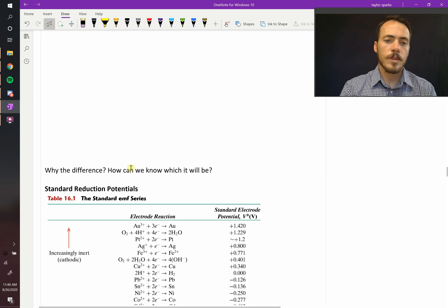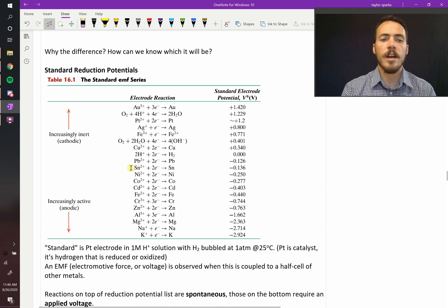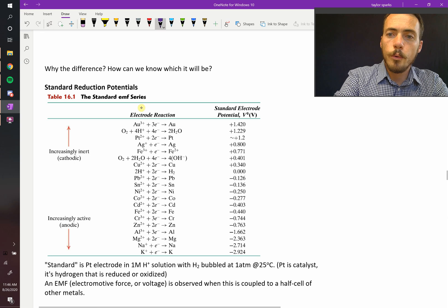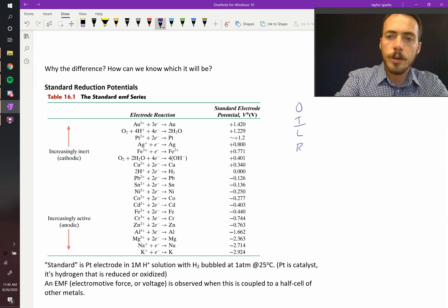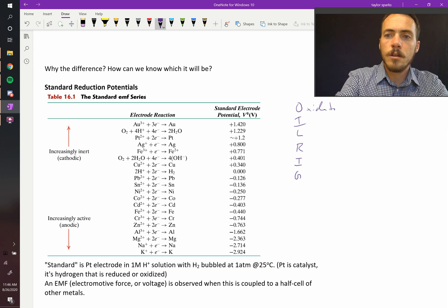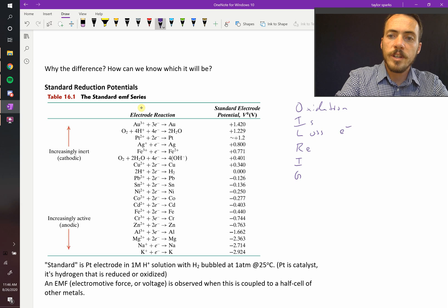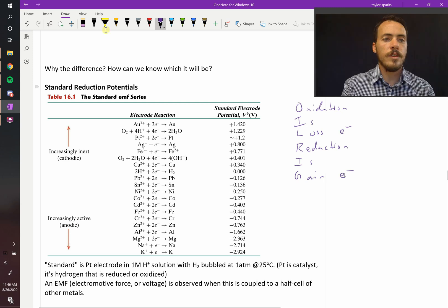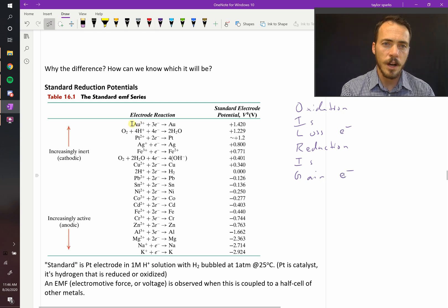Well, we need a tool to figure it out. So we're going to use something called the standard reduction potential tables. In these tables, you see, first off, they're reduction reactions, and you remember from basic chemistry, oil rig. That acronym stands for oxidation is the loss of electrons, where reduction is gain of electrons. So in all of these cases, these are reductions, because look at it. You start with something, an ion of a metal.